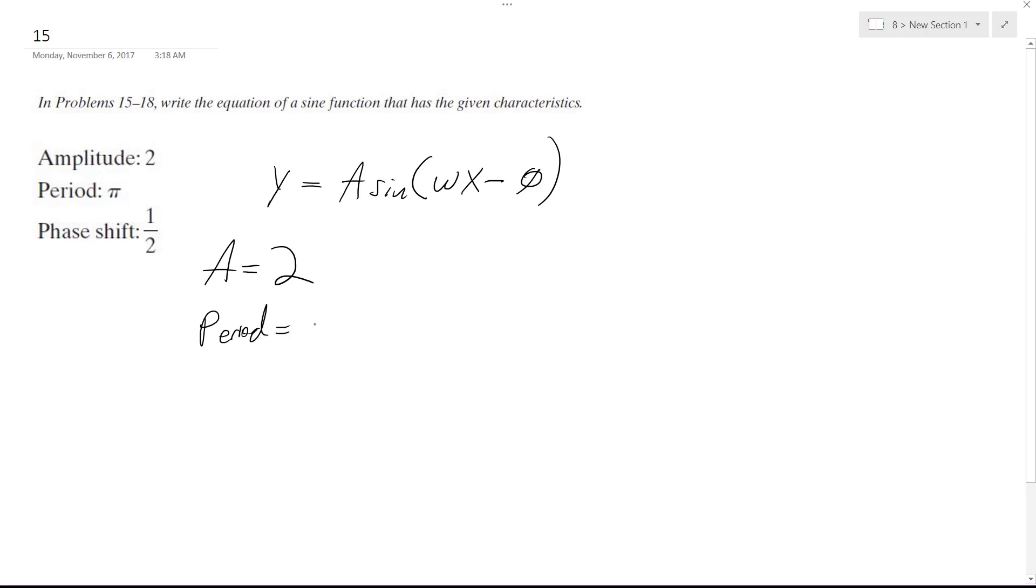The period needs to equal pi, and the period equals 2 pi divided by omega, which is going to equal pi.